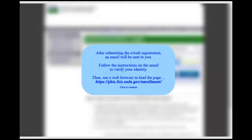After successfully completing the eAuth registration, you will receive an email message with instructions on verifying your identity. After that, use a web browser to load the page phis.fsis.usda.gov/enrollment.